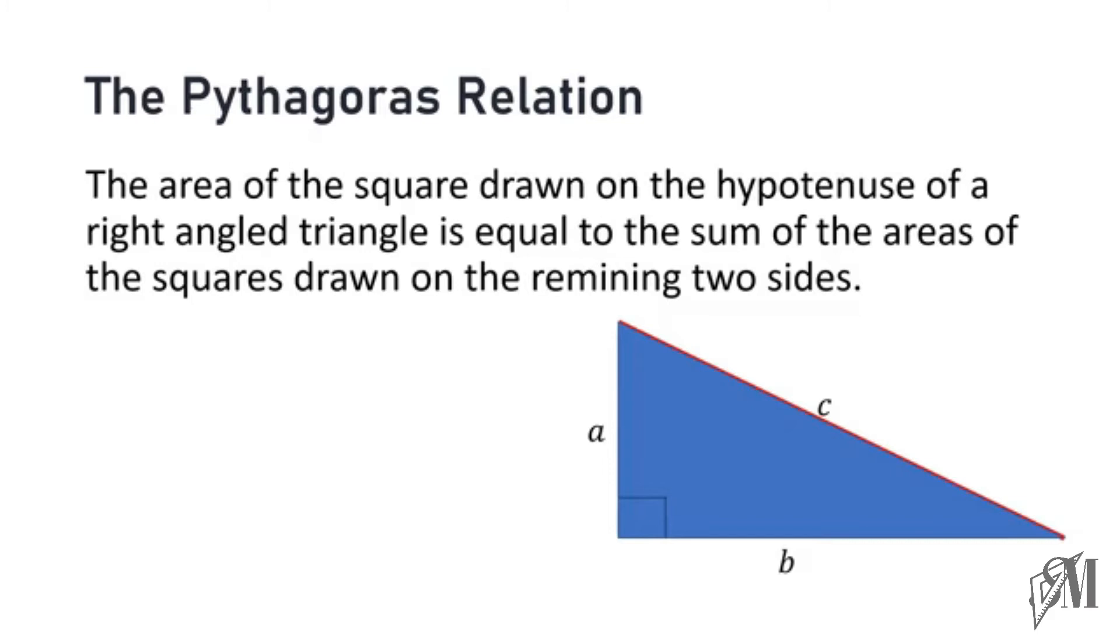According to the relationship, we can write that the sum of the squares of a and b is equal to the square of c. This is the representation of the Pythagoras relationship in words and in symbols.